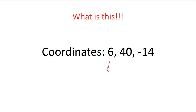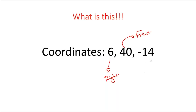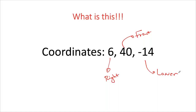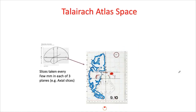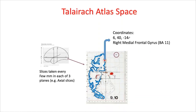If x equals 6, the area is to the right of the origin. A y value of 40 means it is in front of the anterior commissure — so it is in the front. A z value of minus 14 means it is below that point — in the lower part. Putting that into the Talairach atlas, this is the right medial frontal gyrus, Brodmann area 11.